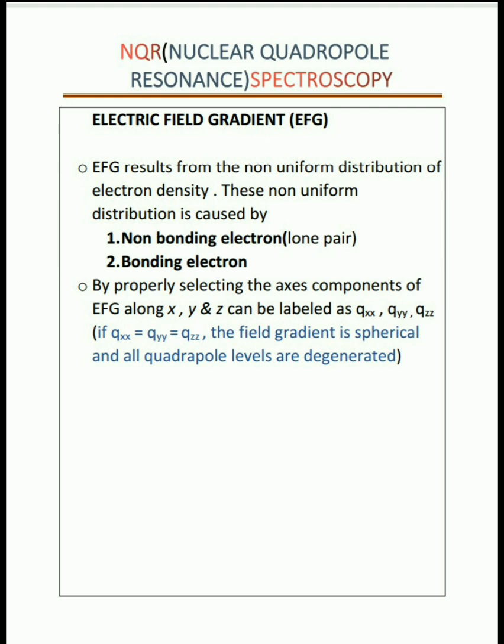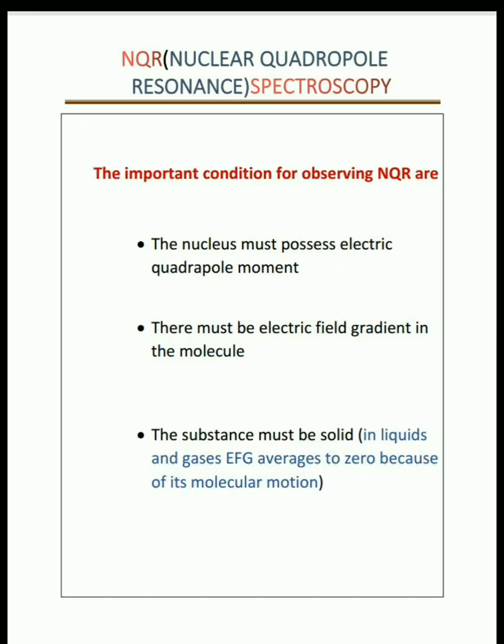A gradient arises in the nucleus called the electric field gradient, which is the rate of change of the electric field in the electronic environment. An important condition of NQR spectroscopy: NQR is observed in solid samples, such as Cl35 and N14. In liquids or gases, the electric field gradient is zero due to molecular motions. N14 is selected because it has a large nuclear quadrupole moment and the presence of bonding with p-character, which is sufficient to generate a high electric field gradient.